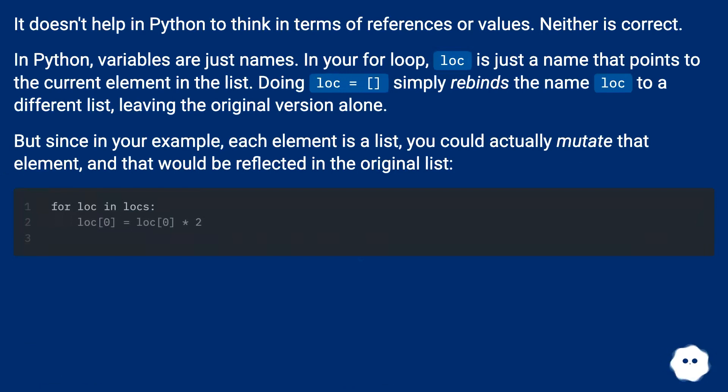It doesn't help in Python to think in terms of references or values. Neither is correct. In Python, variables are just names. In your for loop, loc is just a name that points to the current element in the list. Doing loc equals simply rebinds the name loc to a different list, leaving the original version alone.